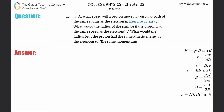Number 19, letter A. At what speed will a proton move in a circular path of the same radius as the electron in exercise 22.12? The speed of the electron in that example was 7.5 times 10 to the sixth meters per second. We have to find the speed of the proton, and we know that the radii between the proton and the electron must be the same — the radius of the curved path the proton follows must equal the radius of the curved path the electron follows.